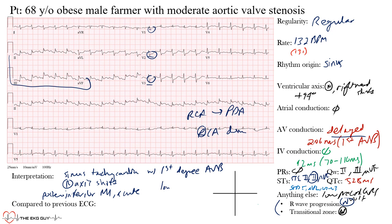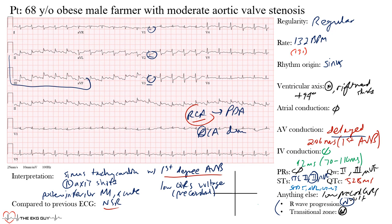Low QRS voltage in the precordial leads is also noted. Compared to a previous EKG showing normal sinus rhythm, we now have loss of voltage, a new first degree AV block, and a fast rhythm. The RCA supplies the AV node, which may explain the new first degree block. Sinus tachycardia may reflect chest pain or another contributing factor. A lot is going on here — hopefully that made sense.